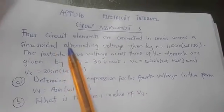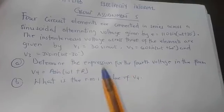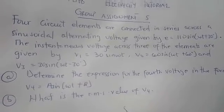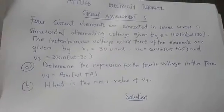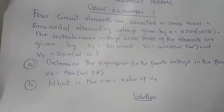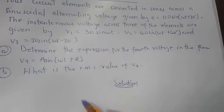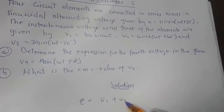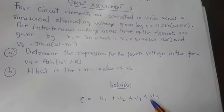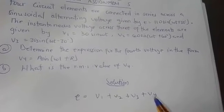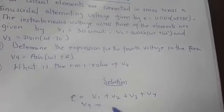The first question asks us to determine the expression for the fourth voltage. Since there are four circuit elements in series, if we have the total voltage and the voltages across three of them, we can find the fourth. We know that voltage across a series connection equals the sum of voltages across each element, so e = V1 + V2 + V3 + V4.